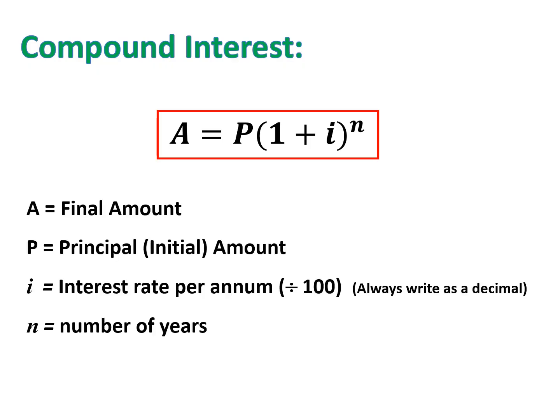All the letters mean the same thing: A is the amount you'll take out at the end of the investment period, P is the principal or initial amount, I is the interest rate divided by 100 to substitute as a decimal, and N is the number of years as an exponent. Compound interest is always used for inflation. If a question states a rate of inflation, you don't need to be told it compounds annually — we must know that inflation always uses compound interest.